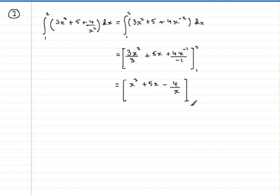Then we just need to substitute for 2. So 2 goes in first: 2 cubed, and then we have 5 times 2, plus 5 times 2, and then minus 4 over 2, minus 4 over 2. Then we subtract: 1 cubed, and then 5 times 1, and then minus 4 divided by 1.